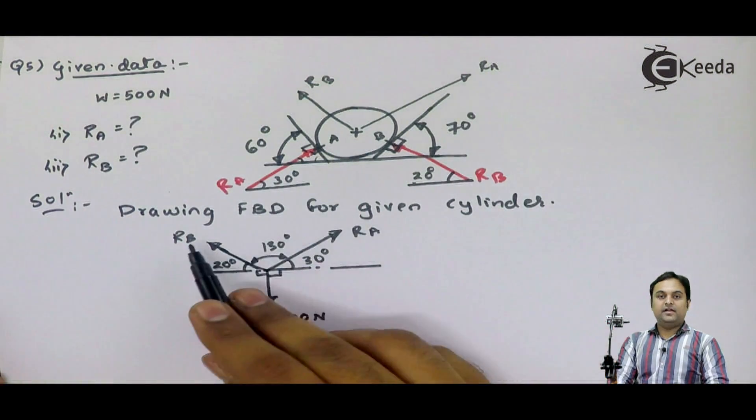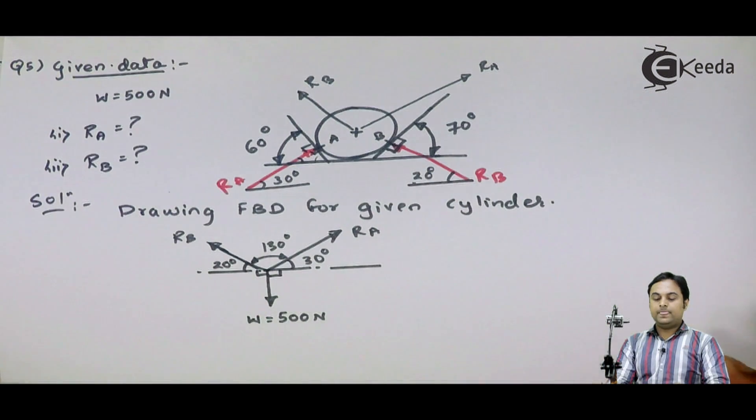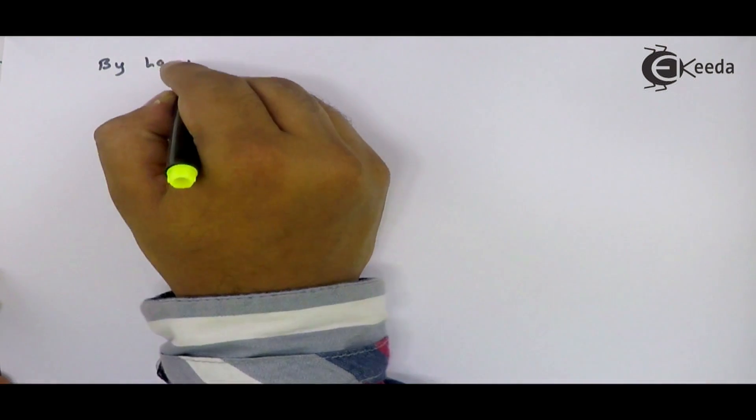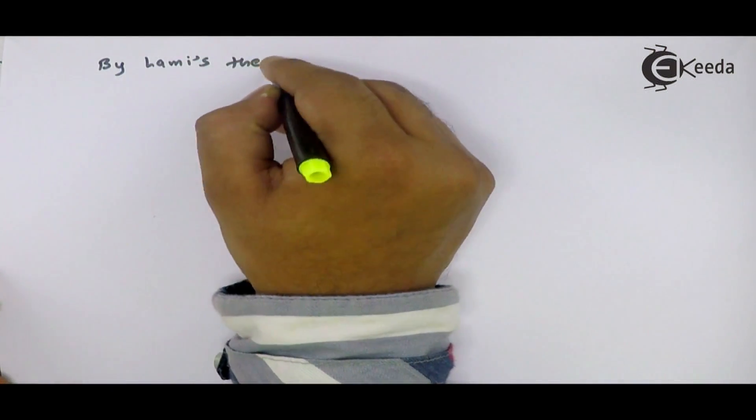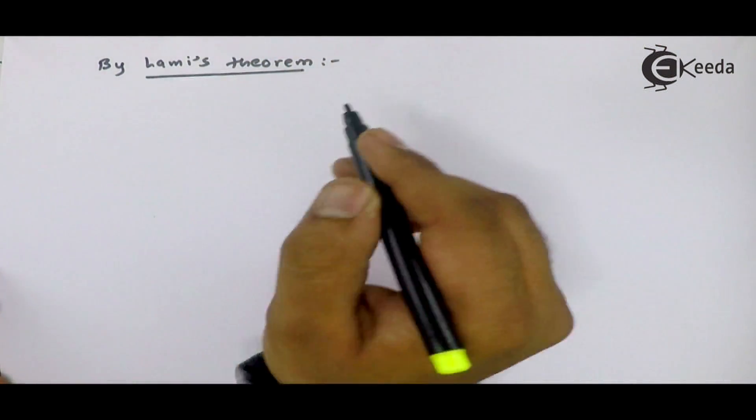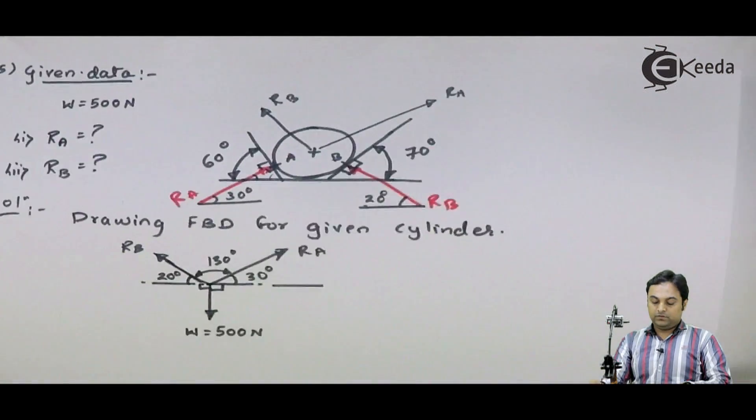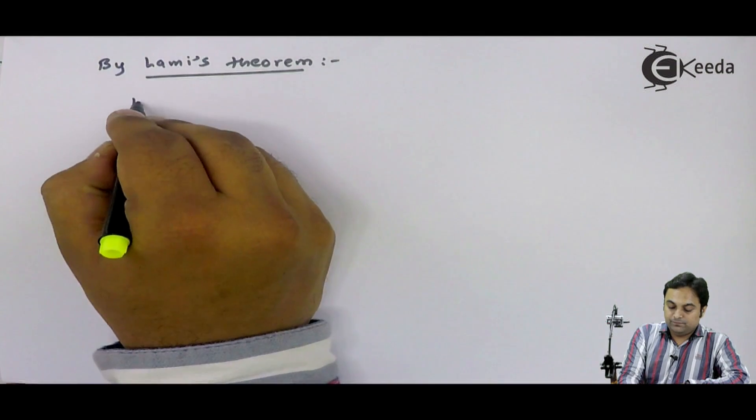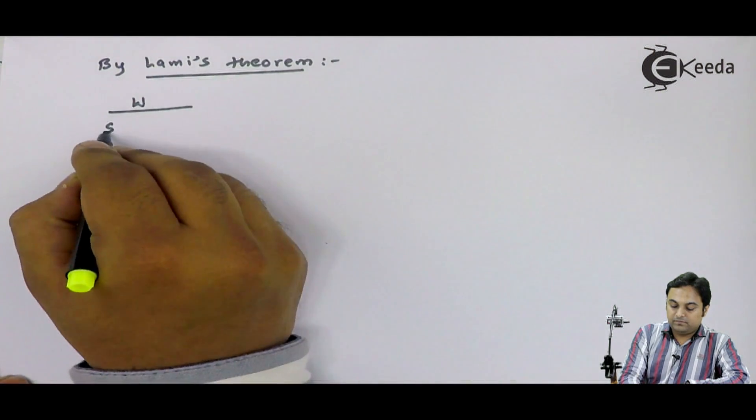Now, I have all the angles and the forces. So, I can easily apply Lame's theorem here. I will say that by Lame's theorem, I will write down, first of all, W, I will write it as W upon sin of angle between RA, RB, that is 130 degree.